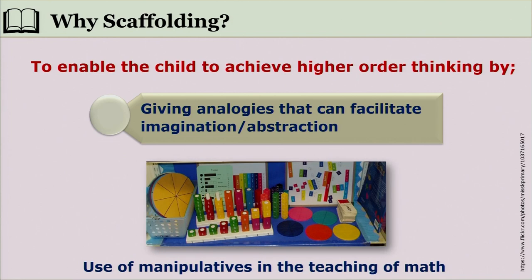Why do we need scaffolding? Scaffolding is the process in which a mentor gives maximum support in the beginning when the child cannot go through the knowledge acquisition process on their own, and then, as the child becomes capable of achieving and acquiring knowledge, the support is gradually withdrawn. This support can be given through analogies that facilitate imagination or abstraction.